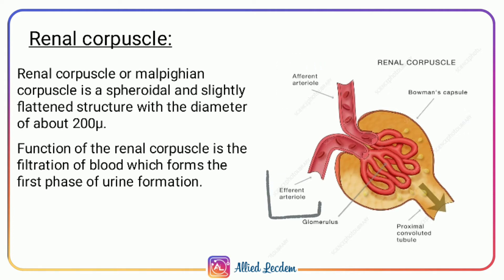We can clearly see the structure of the renal capsule. There is an afferent arteriole on one end and an efferent arteriole on the other end. The afferent arteriole enters the Bowman's capsule and divides into four or five large capillaries, which is known as the glomerulus. The function of the renal corpuscle is filtration of blood, which forms the first phase of urine formation.